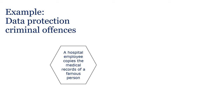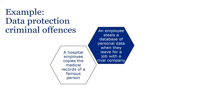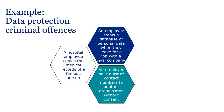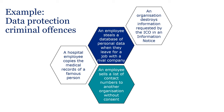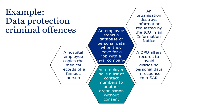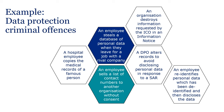Common criminal offences include: an individual obtaining the personal data of another person — for example, a hospital employee copying the medical records of a famous person; an employee stealing a database of personal data when leaving for a job with a rival company; an employee selling a list of contact numbers to another organisation without the controller's knowledge or consent; an organisation destroying information requested by the ICO in an information notice; a DPO altering records to avoid disclosing personal data in response to a SAR; and an employee re-identifying personal data which has been de-identified and then disclosing it to someone else.